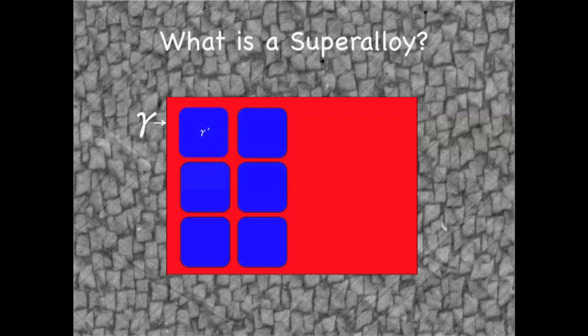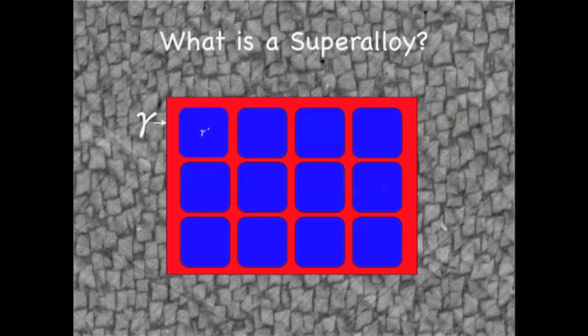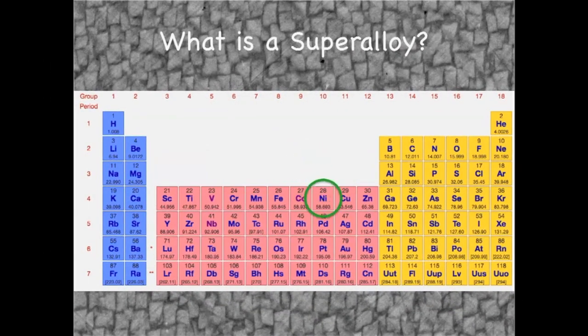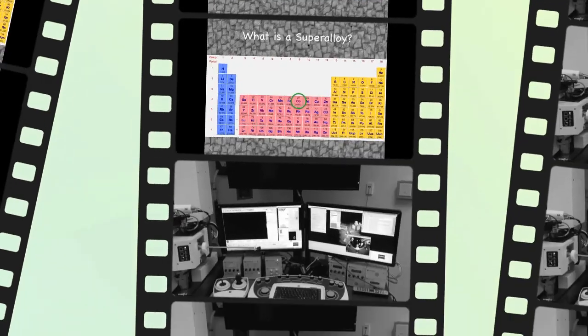The high volume of precipitates serves to block plastic flow in these metals and are very stable up to high temperatures. Most superalloys are nickel-based, however cobalt, which has a 40 degrees C higher melting temperature than nickel, has recently been shown to form the same type of microstructure.